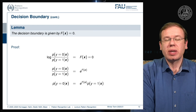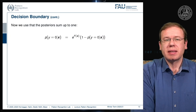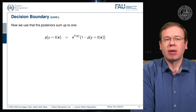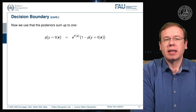Furthermore, we can now rearrange to P(y=0 | x). This is actually the probability for class zero, and we can see that this can be expressed by the respective term on the right-hand side. The probability of y=1 can be expressed as one minus P(y=0 | x). So this is a slight modification, and now we can see that we have two times P(y=0 | x) and we can rearrange this.